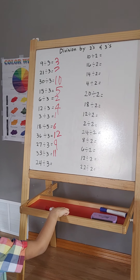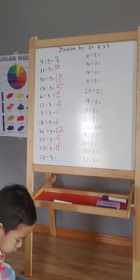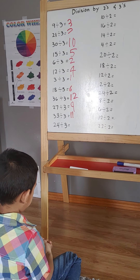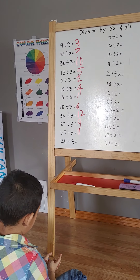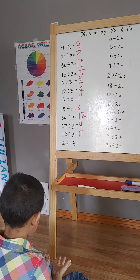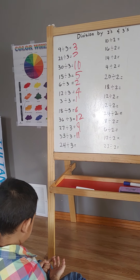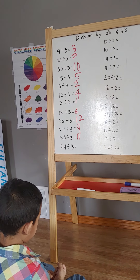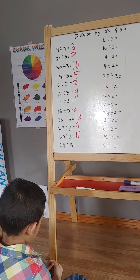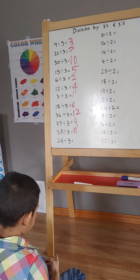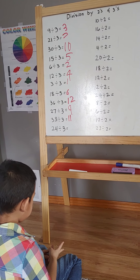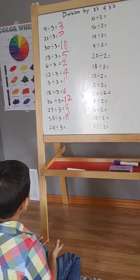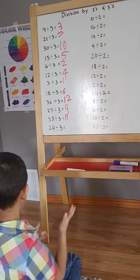Okay, 6 divided by 3. 3, 6, 9, 12, 15, 18, 21, 24. 18.